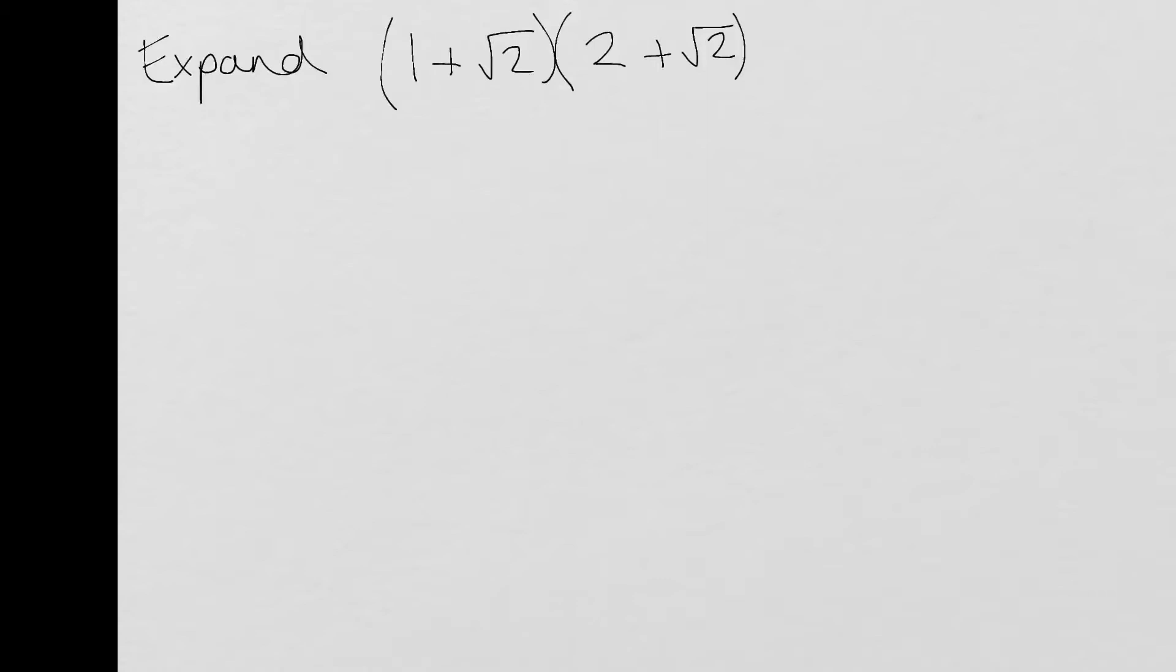So first of all we're being asked to expand (1+√2)(2+√2). So we're going to take the box method to expand this. It doesn't matter which way round you put the brackets into the box just provided you keep the two together.